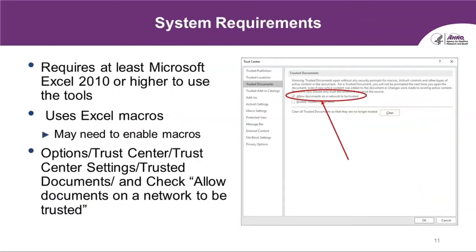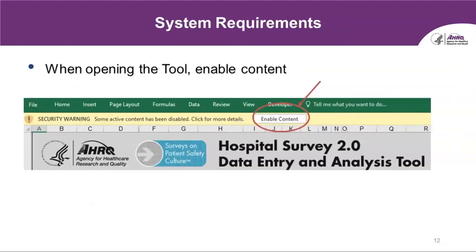Here are the system requirements before we get into the actual demo. The tools use Excel macros, so when we send you the tool by email, make sure your email firewall accepts macros. You will also need to enable macros before using the tool. When opening the tool, you may need to click the Enable Content button at the top. I also recommend that when you save your results, continue to save it as a .xlsm file to maintain the macros — do not save it as a .xlsx file.